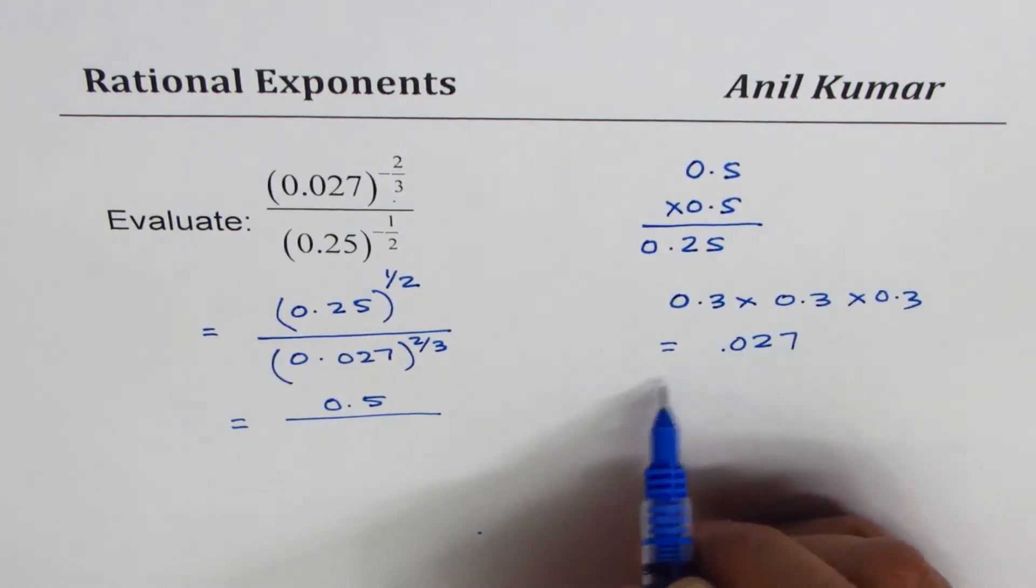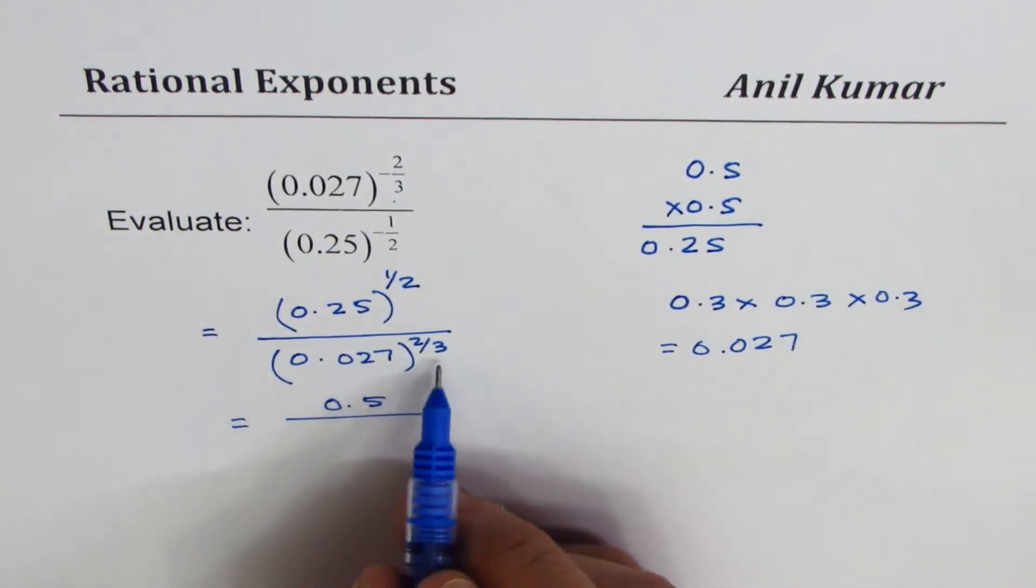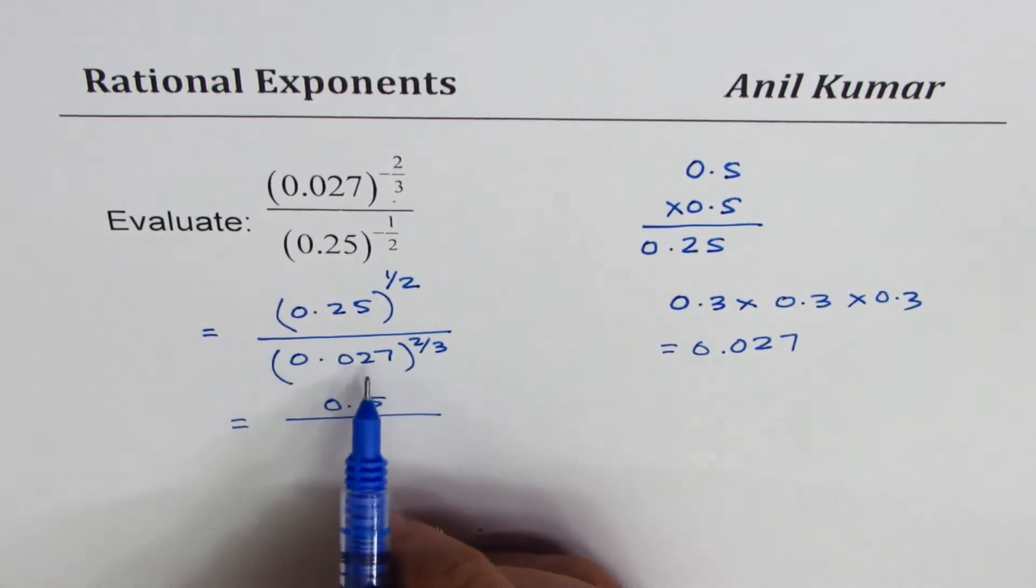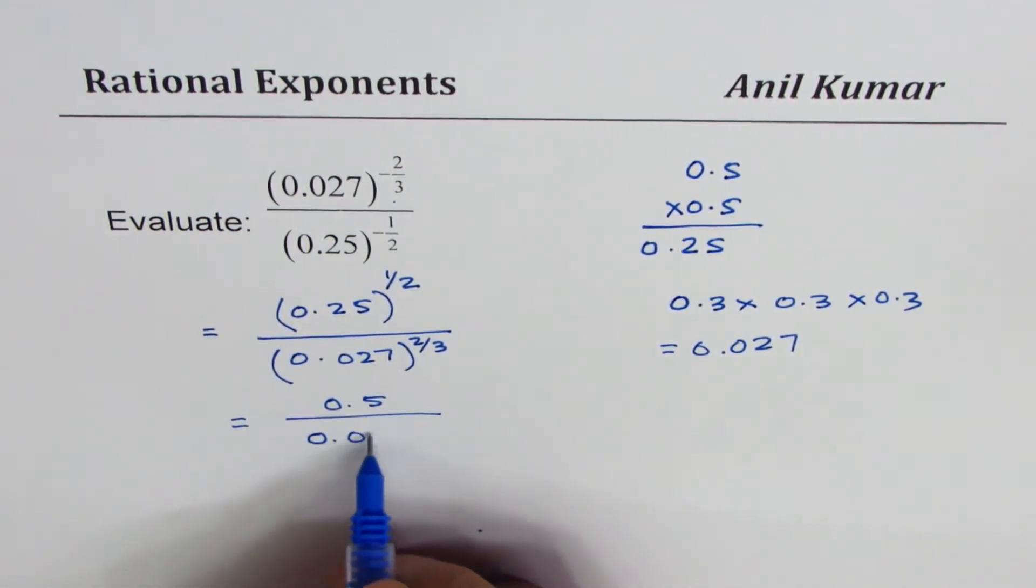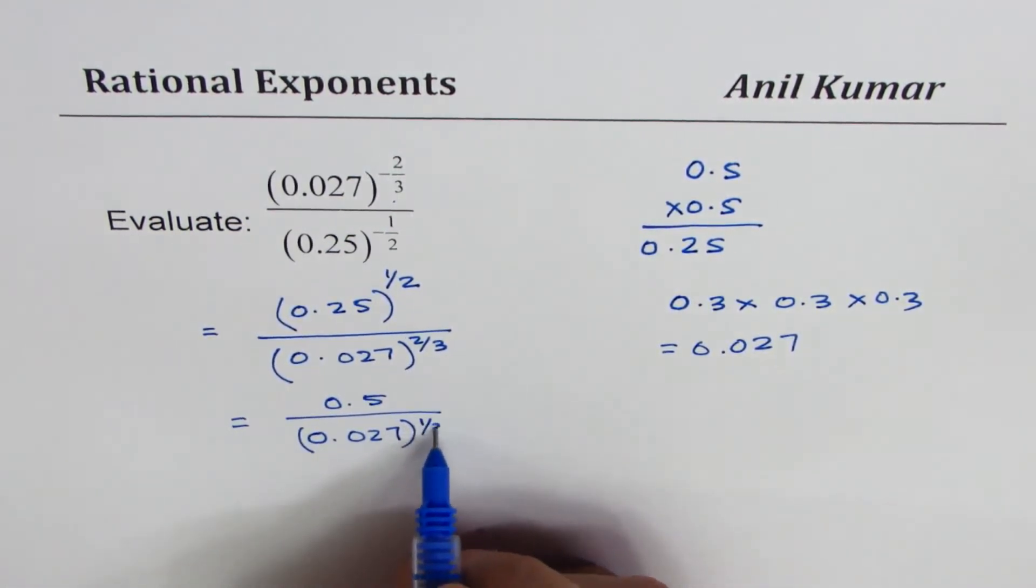So 0.027, the cube root of 0.027 is 0.3. So we could actually write this as, I'll do it in two steps, we could write this as (0.027) to the power of 1 over 3, and then we'll later square it.